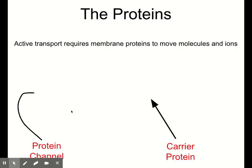The final difference between active and passive transport is how the molecules physically move across the membrane. Unlike passive transport, where molecules diffuse across between the gaps or pores in the membrane — within pores or between your phospholipids — active transport requires membrane proteins to physically move the ions and molecules across the membrane. These proteins carry the molecules and ions and force them across against the concentration gradient, and to do that, they require energy.